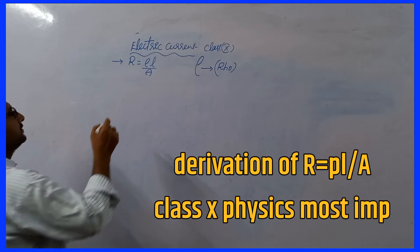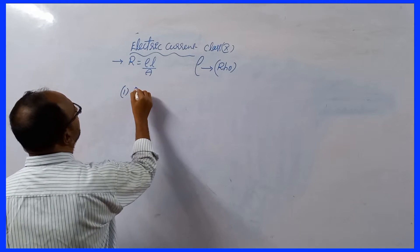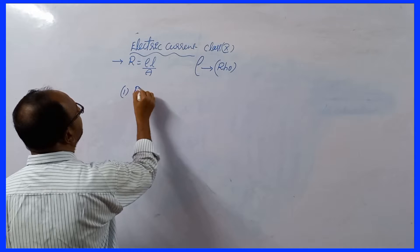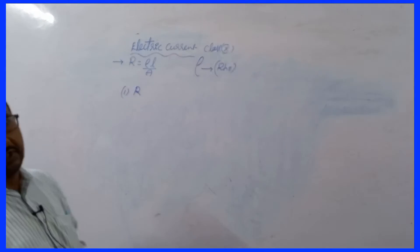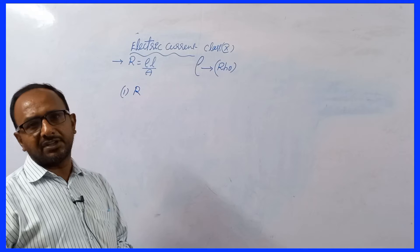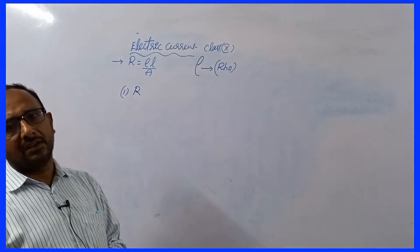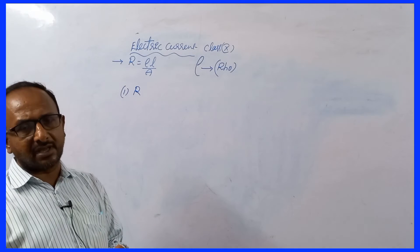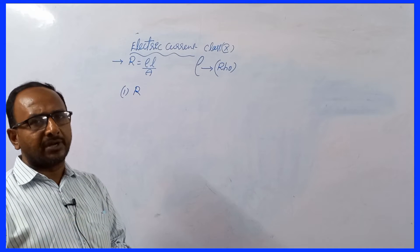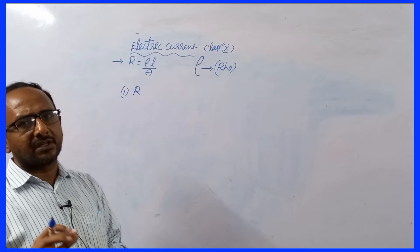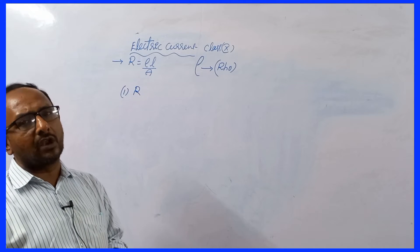First, electric resistance of a conductor depends on the nature of the material, temperature of the conductor, length of the conductor, and cross-sectional area. These are the 4 laws from which we can derive the formula.